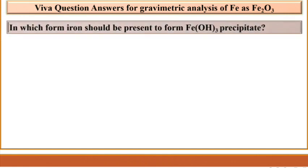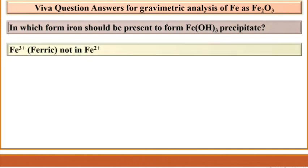In which form should iron be present to form the Fe(OH)₃ precipitate? It should be in the Fe³⁺, that is ferric form, and not in the Fe²⁺ form.